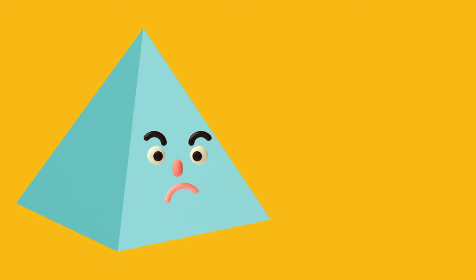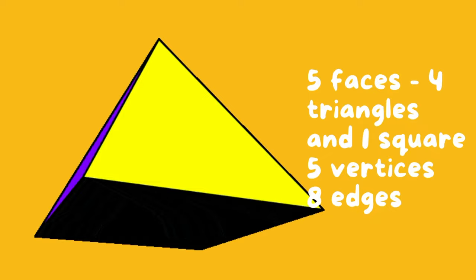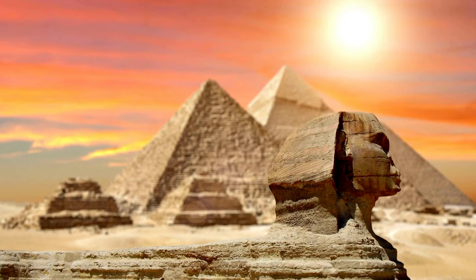Here comes the pyramid. It has 5 faces: 4 triangles and a square at the bottom. It has 5 vertices and 8 edges. You can find them in Egypt.